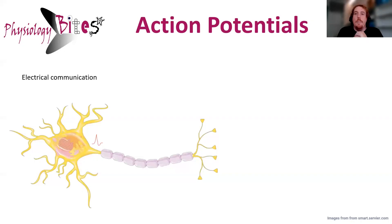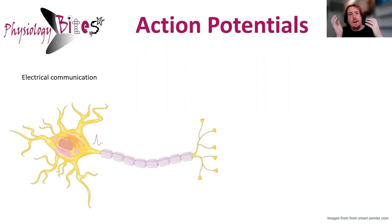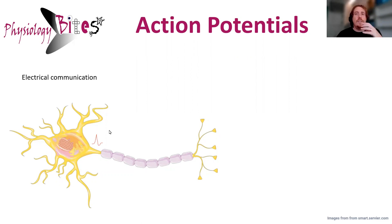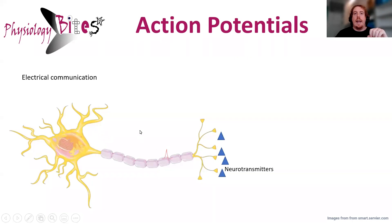Welcome to Physiology Bytes, everyone. My name is Ben, and today we're going to be talking about action potentials. Action potentials are a vital electrical communication tool in our body. They're used by many different cell types, but today we're going to be focusing on neurons and neuronal action potentials. They allow a signal to be transmitted incredibly rapidly from the body of a neuron all the way to the axon terminals, and from that we'll get the release of neurotransmitters, which will have an effect on the post-synaptic cell.